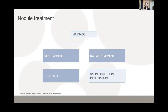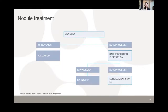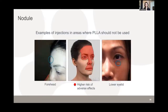For nodule management: start with massage; if no improvement, try intralesional saline infiltration; if that fails, surgical excision is an option, though the presenter has never needed to use it. Nodules tend to resolve over time and are typically not large or bothersome. Examples shown were located in areas where PLLA should not be used — the forehead and lower eyelid.